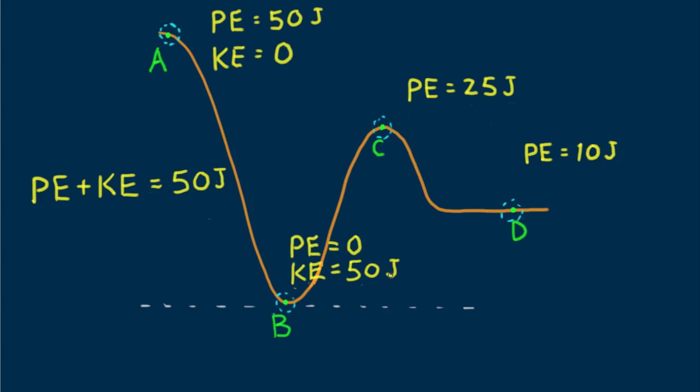At point B kinetic energy has got to be 50 joules where potential energy is zero. Right? I hope you agree. And at point C can you see where potential energy is 25 joules? Kinetic energy there is also 25 joules.